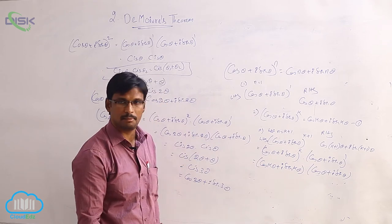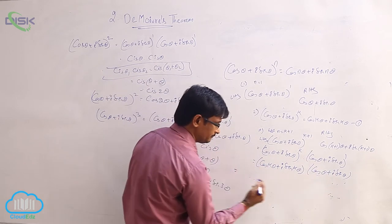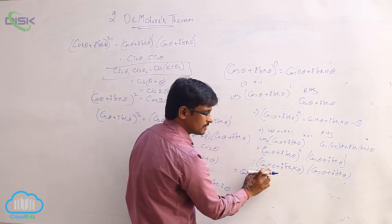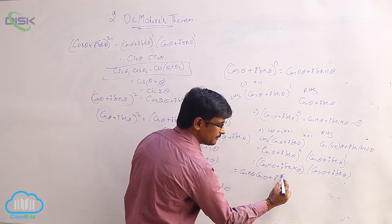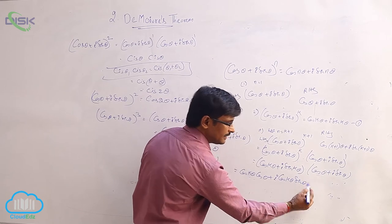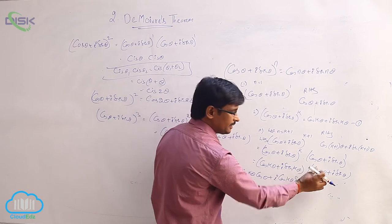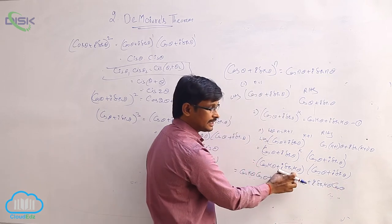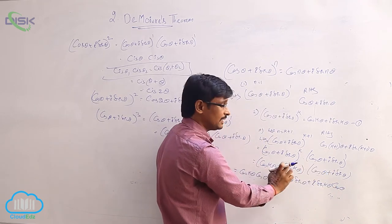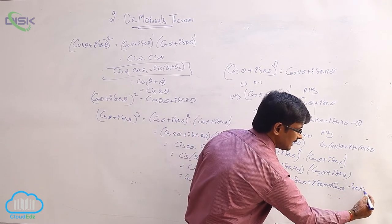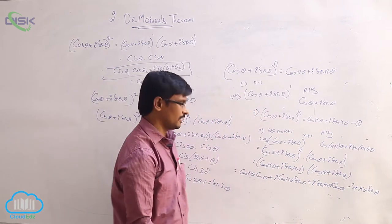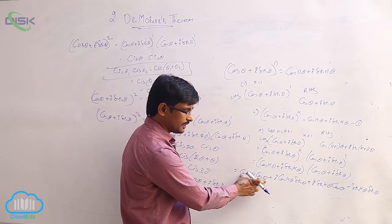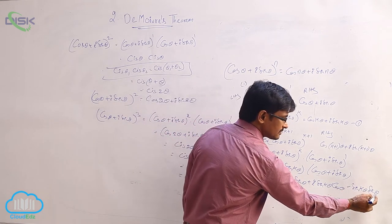Now multiplying out: cos k theta into cos theta, plus cos k theta into i sine theta — that is i cos k theta sine theta. Next, multiply i sine k theta into cos theta, and i sine k theta into i sine theta — since i squared equals minus 1, that gives minus sin k theta sine theta. Now we have real parts and imaginary parts. The real part is cos k theta cos theta minus sin k theta sin theta.